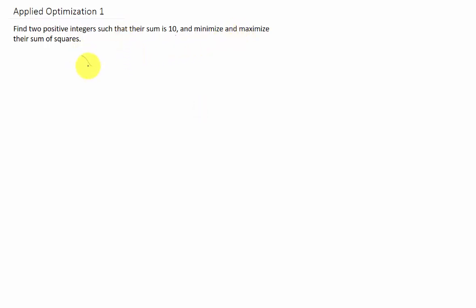Well, what does that mean? Well, we have two integers, we'll call them x and y, and their sum is 10. And what we need to do is minimize and maximize the function x squared plus y squared. That's what the sum of squares means.